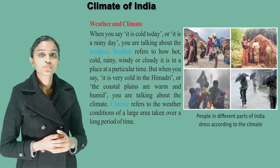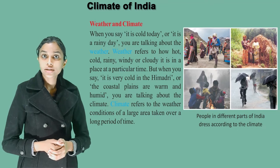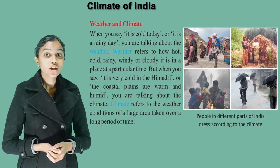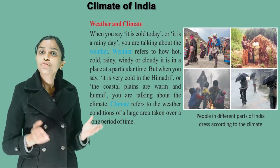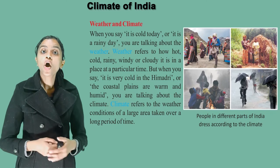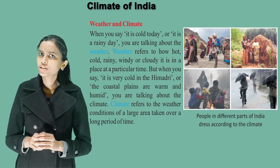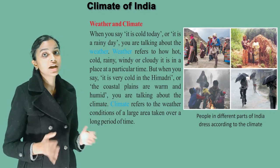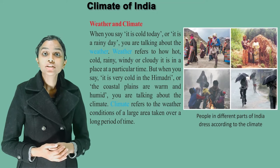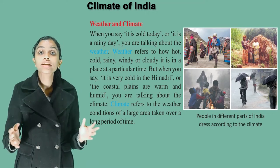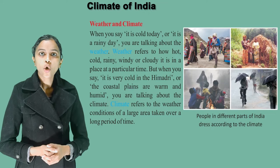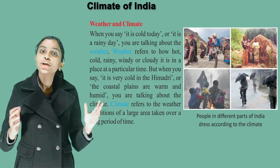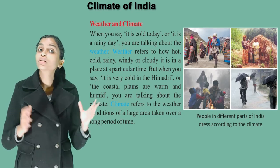Weather and climate. When you say it is cold today or it is a rainy day, you are talking about the weather. Weather refers to how hot, cold, rainy, windy or cloudy it is in a place at a particular time. But when you say it is very cold in the Himalayas or the coastal plains are warm and humid, you are talking about the climate.